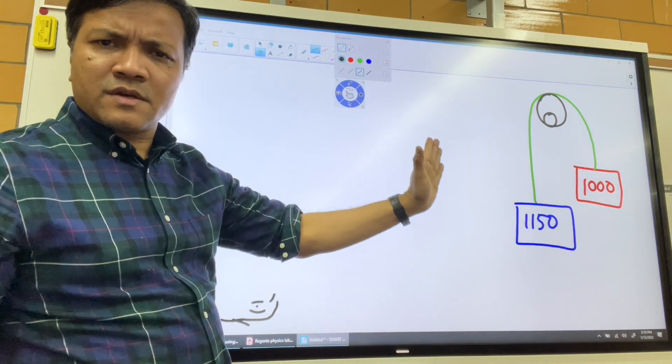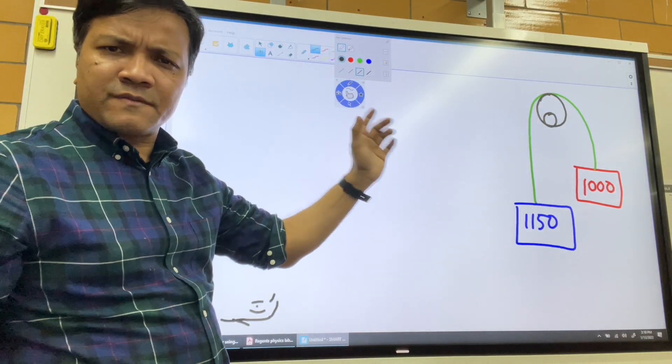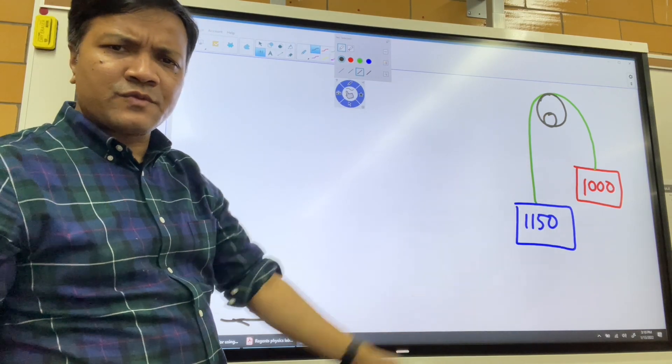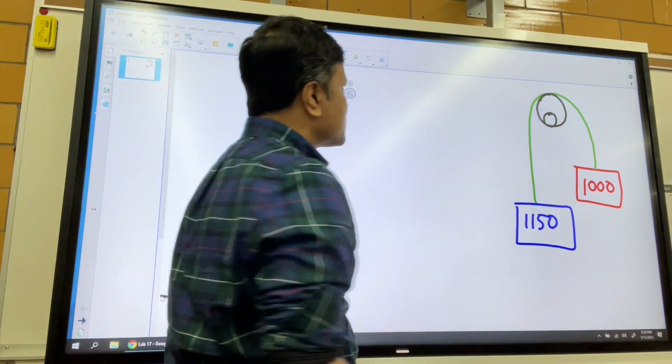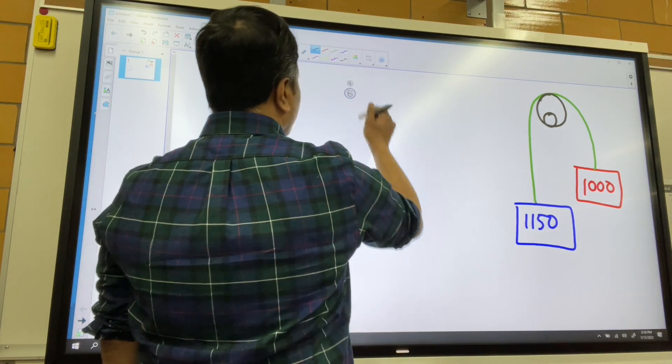That's the elevator. We have two masses, 1000 kilogram and 1150 kilogram. What do we need to find? We need to find the acceleration. So this is pretty simple.